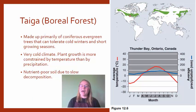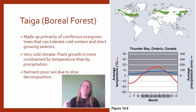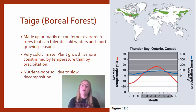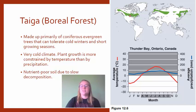The next biome is the taiga or boreal forest. It's still a pretty cold biome but it has a lot of coniferous evergreen trees — pine trees. Plant growth is really limited because it's cold most of the year. Precipitation is pretty constant but there's not a whole lot of it. Also, because it's cold for so much of the year there is not a lot of decomposition happening in the soil, since microbes and insects that decompose organic material can't survive in the cold. That means the soil does not have a lot of nutrients.